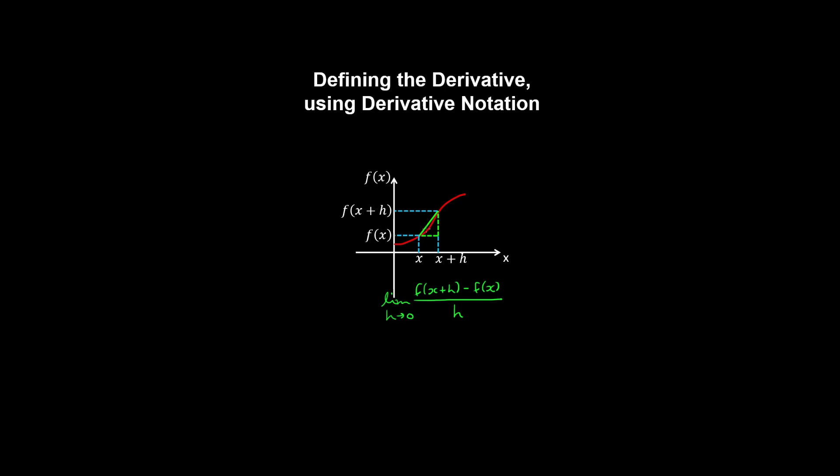So for example, as h gets smaller and smaller, we get another secant, and that gives a better approximation to the slope of the tangent to the curve at x.